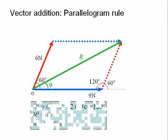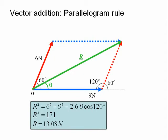Using the cosine rule, the magnitude of r can be determined as shown here.